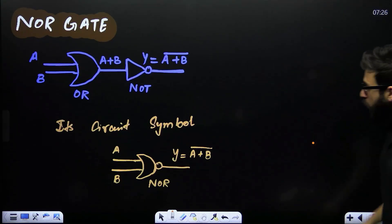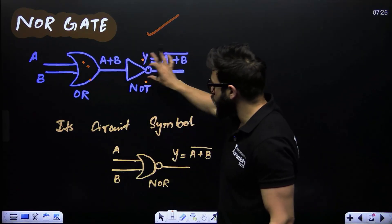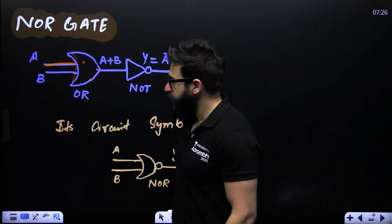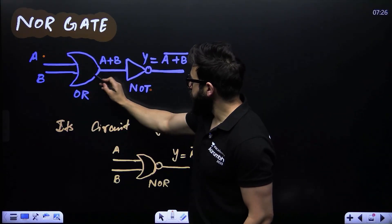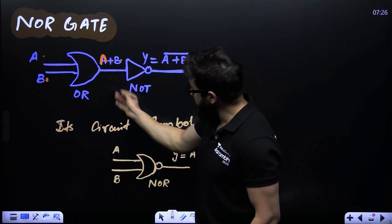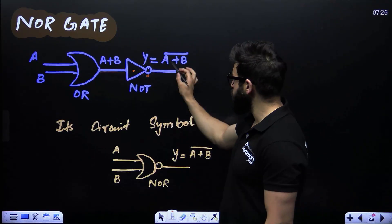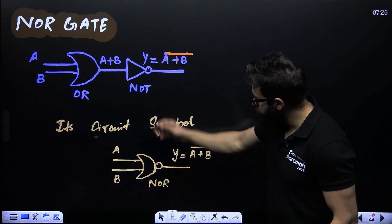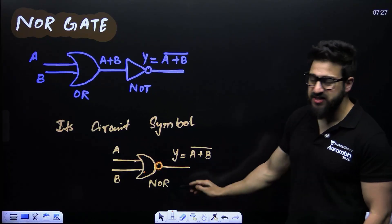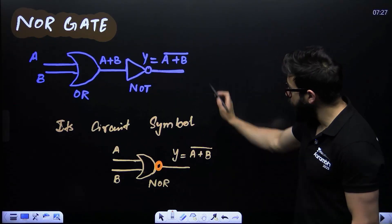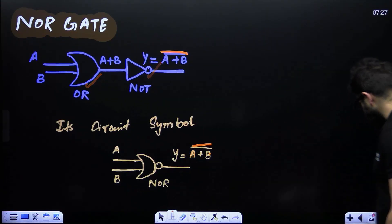The NOR gate is simply the combination of OR plus NOT. When you join an OR gate with a NOT gate, you get a NOR gate. The OR gate does addition A + B, then the NOT gate puts the bar, giving final output (A + B)-bar. In the circuit symbol, instead of drawing the separate NOT gate, you place a small ball at the output of the OR gate symbol — that is the symbol of the NOR gate.